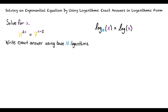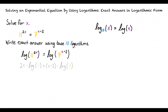Remembering the logarithm power rule, if we take the logarithm of a number that is raised to a power, we can rewrite it as a power multiplied by the logarithm of the number that was raised to the power. So, taking the base 10 logarithm of both sides of the equation, we'll get 2x times the base 10 logarithm of 11 equal to x minus 2 times the base 10 logarithm of 7. That's exactly right.